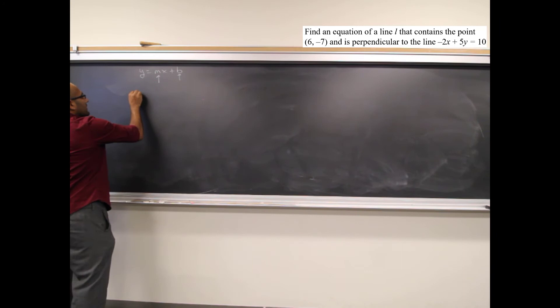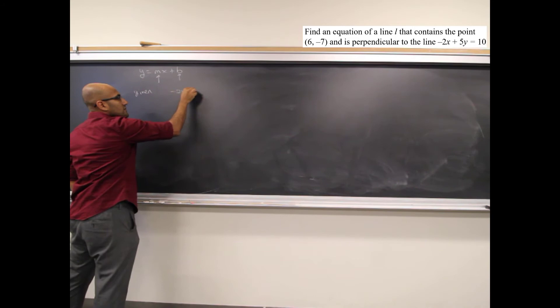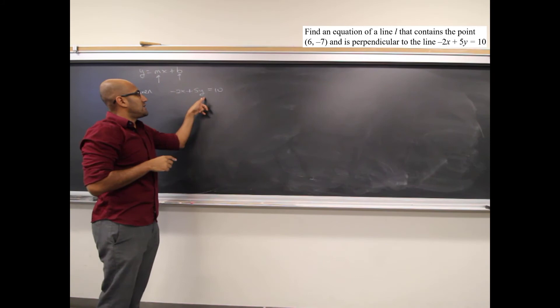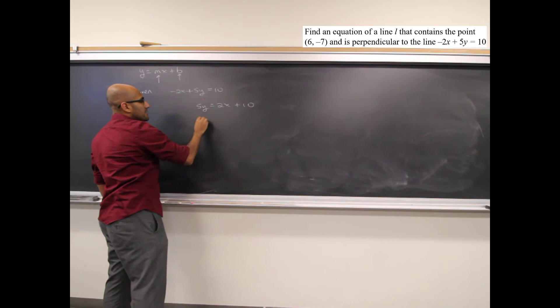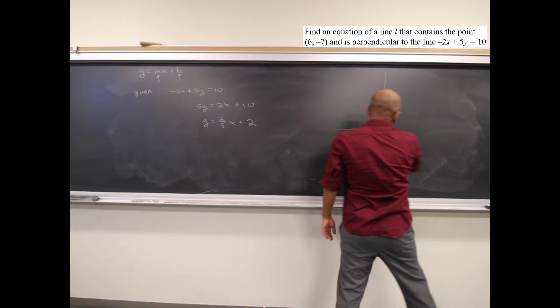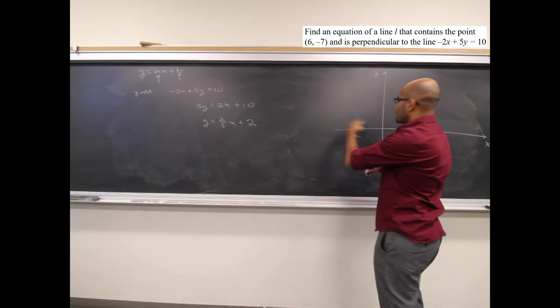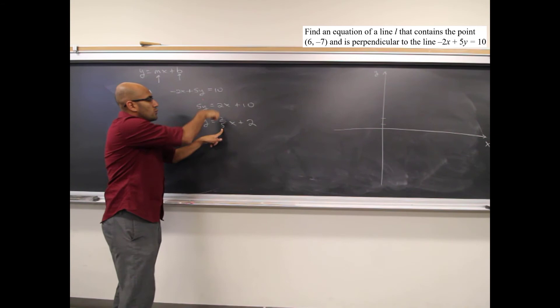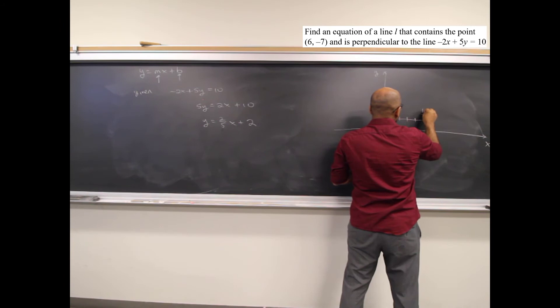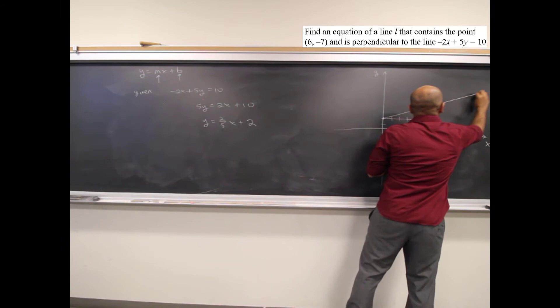The given equation is negative 2x plus 5y equals 10. Solving for y: 5y equals 2x plus 10, so y equals 2/5 x plus 2. A quick sketch: y-intercept at 2, slope 2/5 means go out 5 units right and 2 units up to another point. That's the given line.